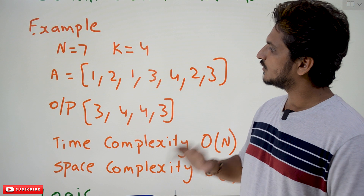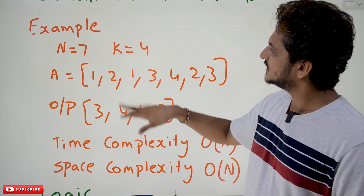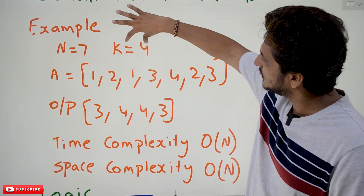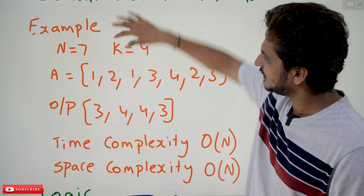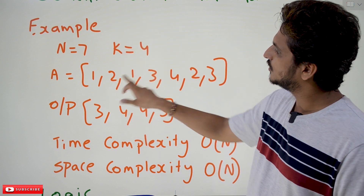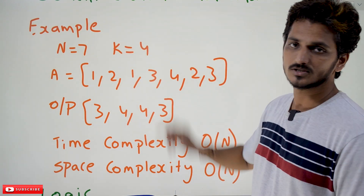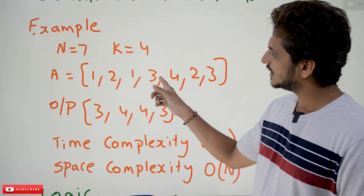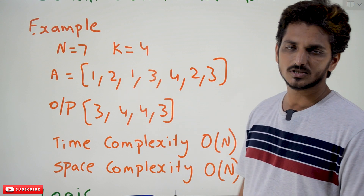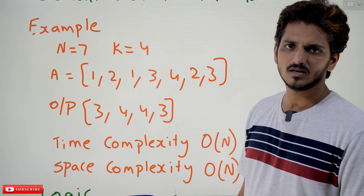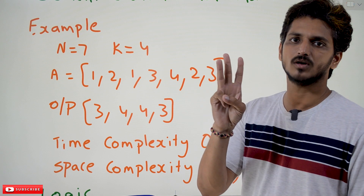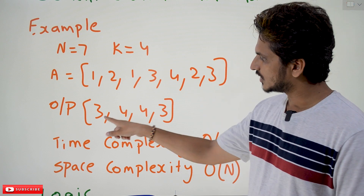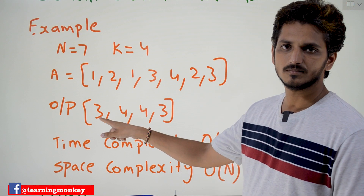So what they are asking is: if you take a window size of 4 — 1, 2, 1, 3 — this is the first window. What are the distinct number of elements present in this? 1, 2, 1, 3 — 3 distinct elements are there. So the output is 3.